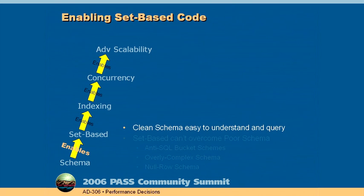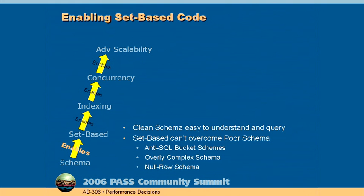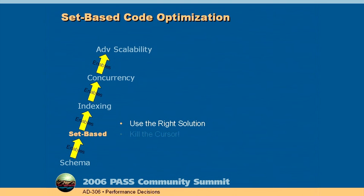So if you have a nice, clean schema and you've avoided over-complexity, then it's easy to understand the schema. It's obvious how to query the schema, and you will set yourself up for writing good set-based code. But I've seen schemas that are extremely difficult to query and almost force you to write cursors and clumsy code. Set-based code can't overcome a poor schema. I've seen schemas so bad that it's nearly impossible to write good set-based code. This is the dependency between schema and set-based: the schema enables or sets up set-based code.